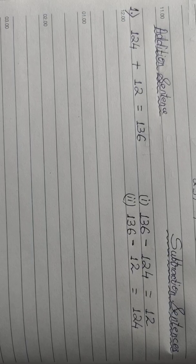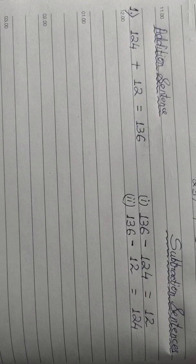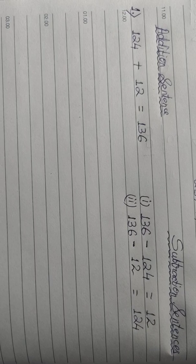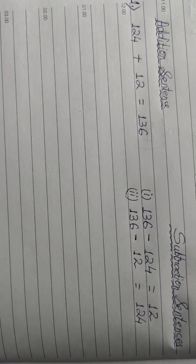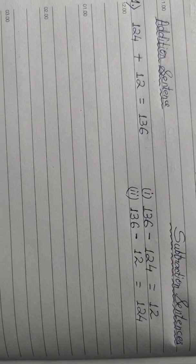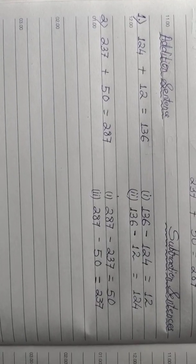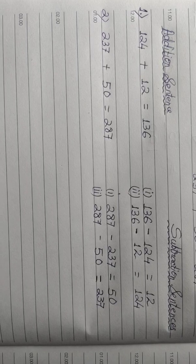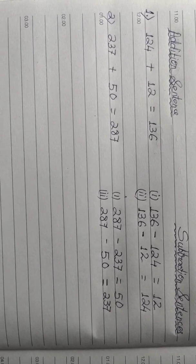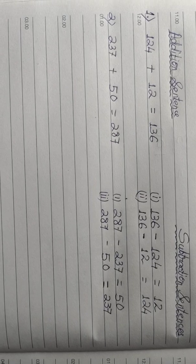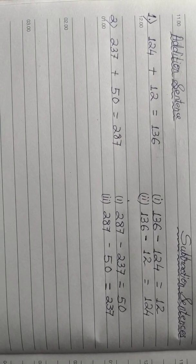From the answer of the addition sentence, minus each of the addends one by one, you can get the subtraction sentence from one addition sentence. Now the second addition sentence is 237 plus 50 equals to 287. See how I have written the subtraction sentence from this particular addition sentence.